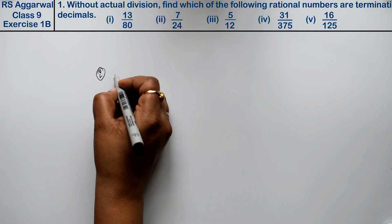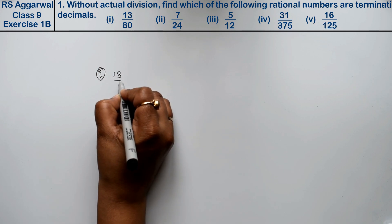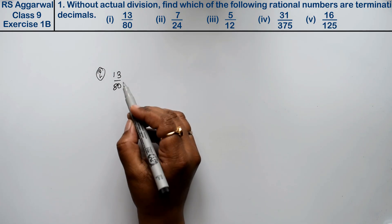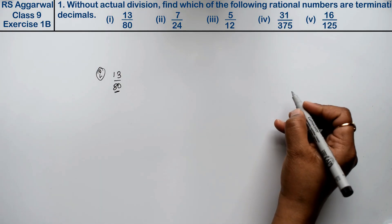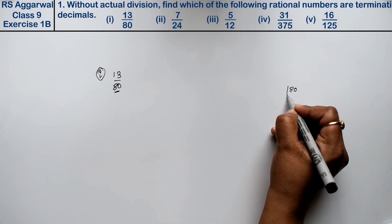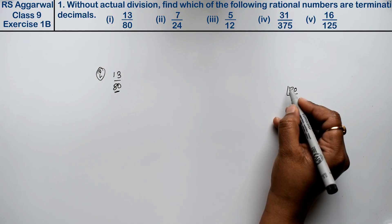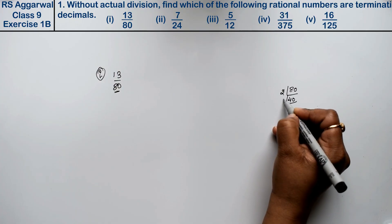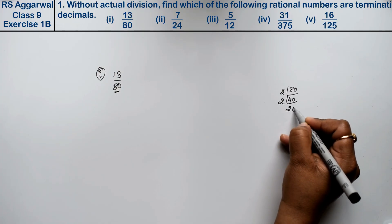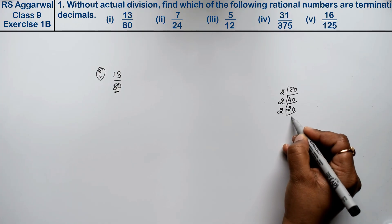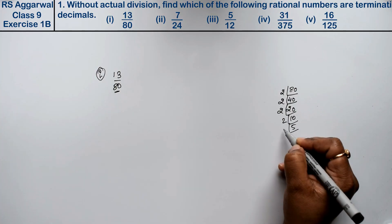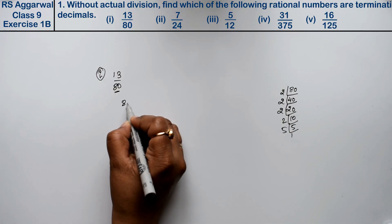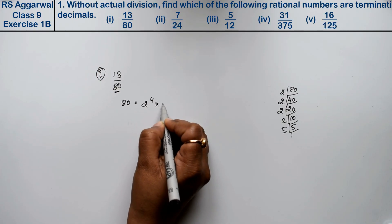The first part is 13 upon 80. Without division, we will find the prime factorization of 80. Taking LCM: 2 fours are 8, 2 twos are 4, so we get 2 to the power 4 into 5. So 80 = 2⁴ × 5.